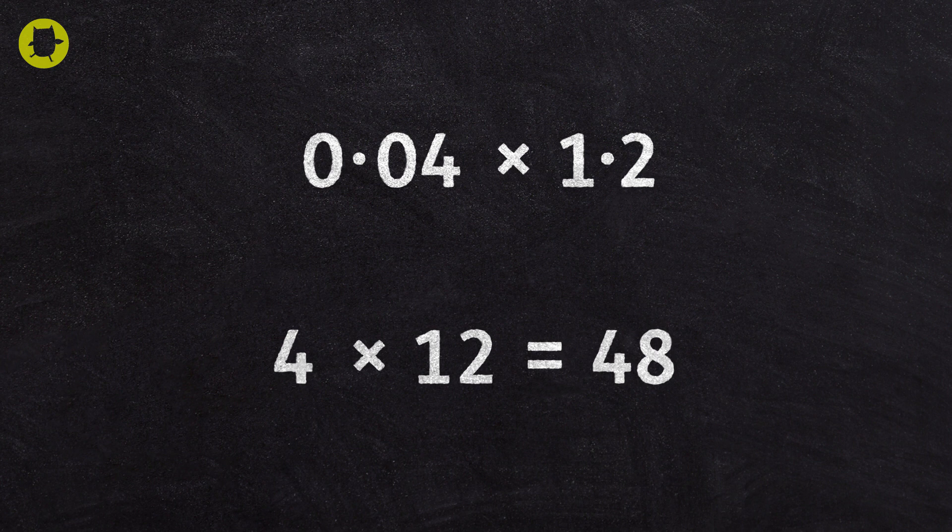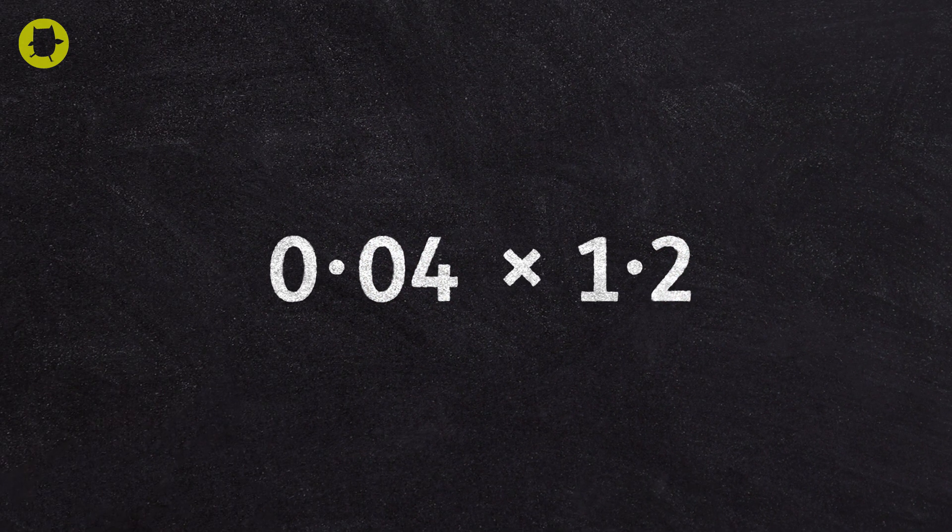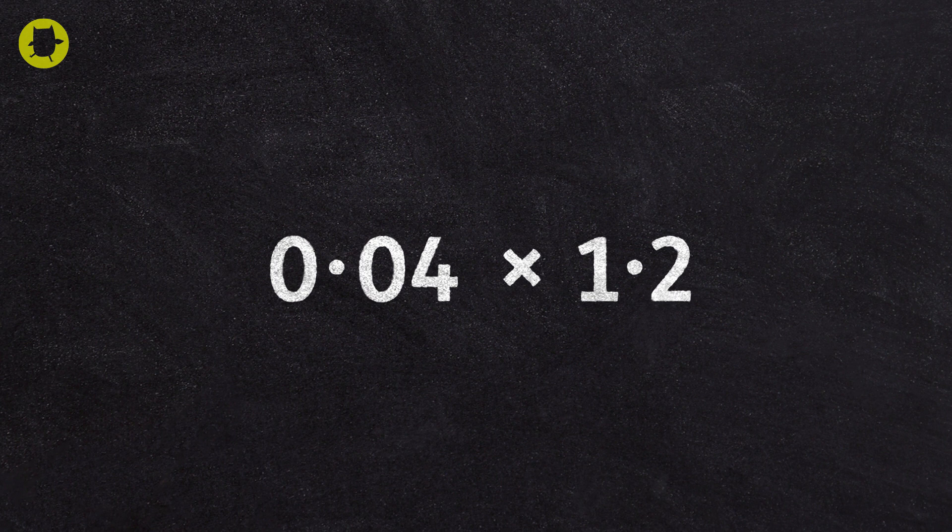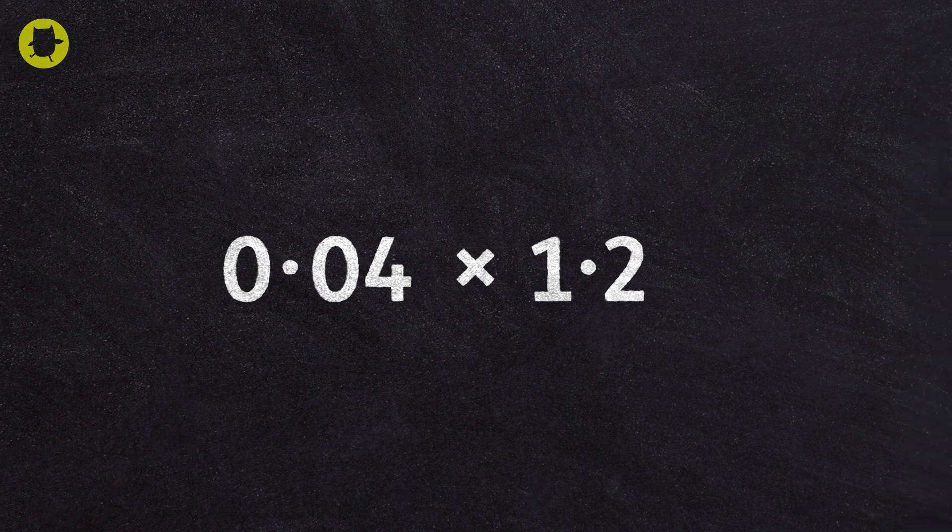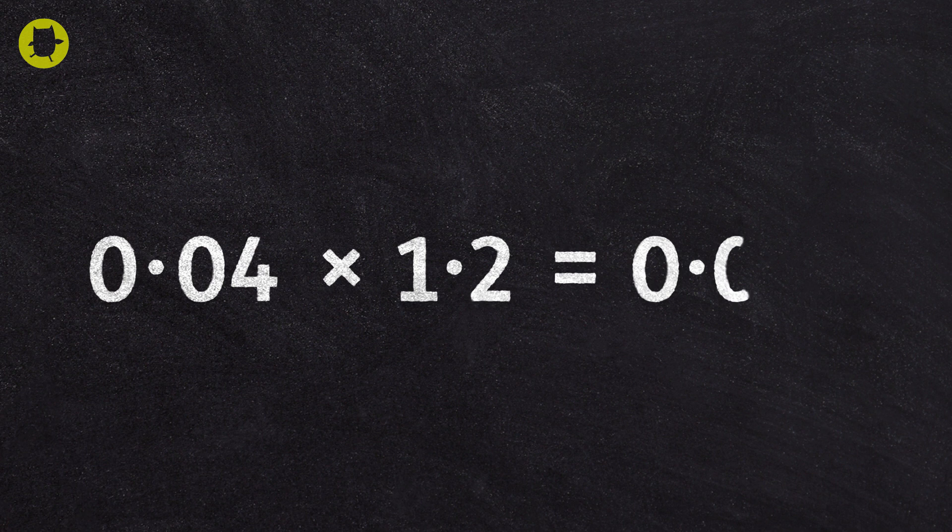0.04 has two numbers after the decimal point and 1.2 has one number after the decimal point. So, the answer must have three numbers after the decimal point. So, 0.04 multiplied by 1.2 equals 0.048.